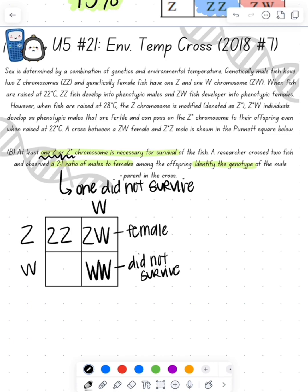Logically, the bottom one's also going to be a ZZ, but that's not possible because we see that that parent donated a W. So how would this one right here be a ZZ?